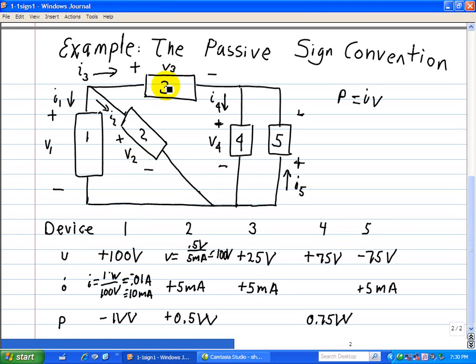Now here, for device 3, the voltage across this is 25 volts, and the current through device 3 is 5 milliamps. And when you multiply that, we just multiply these together, and that turns out to be 0.125 watts. Again, we're just using this relationship to calculate the other variables.